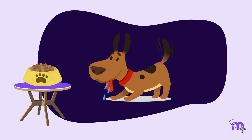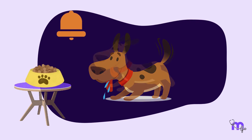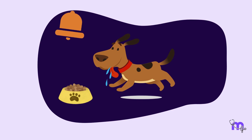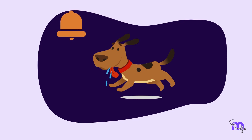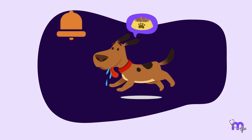He observed that the sight of food would cause salivation in the dog. As a usual practice, a bell rang every time he presented food to the dogs. Over time, the dogs learned to associate the sound of the bell with the arrival of food. As days passed, something remarkable happened — just the sound of the bell alone made the dogs start salivating, even if no food was in sight.